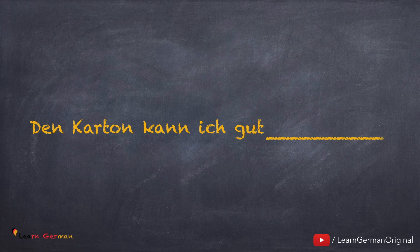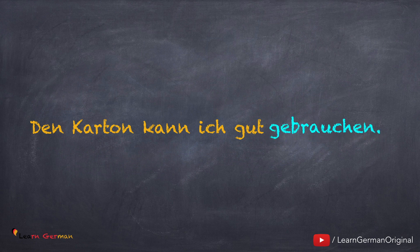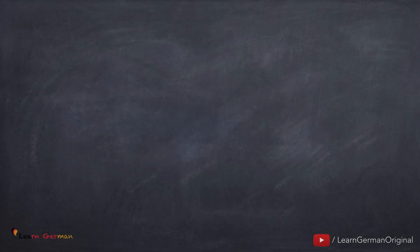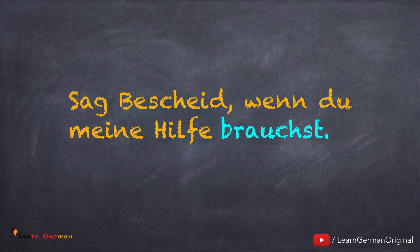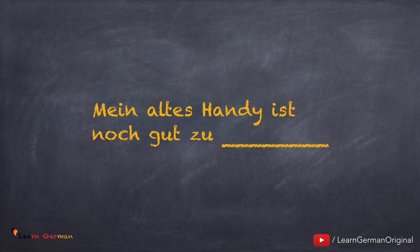Hier ist der nächste Satz. Die Antwort lautet: Den Karton kann ich gut gebrauchen. Hier bedeutet gebrauchen verwenden — also hier kann ich auch das Verb brauchen benutzen: Den Karton kann ich gut brauchen. Und jetzt der nächste Satz. Die Antwort ist: Mein altes Handy ist noch gut zu gebrauchen.